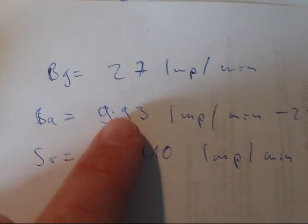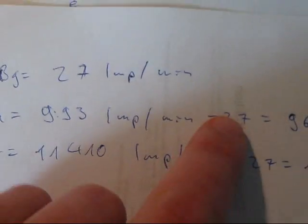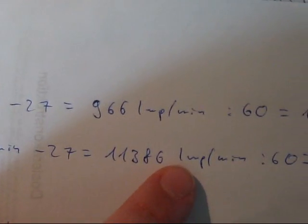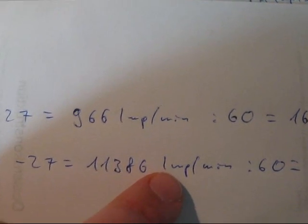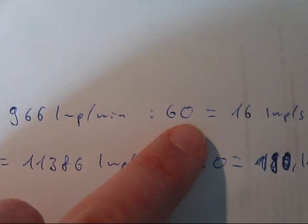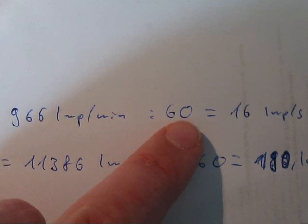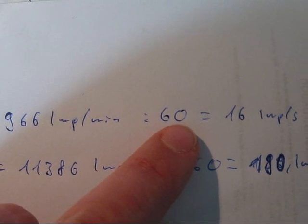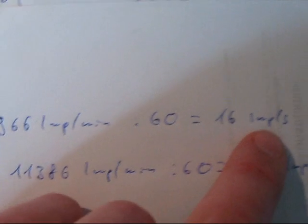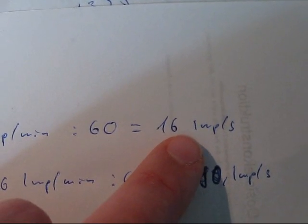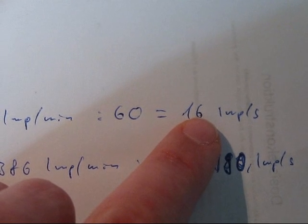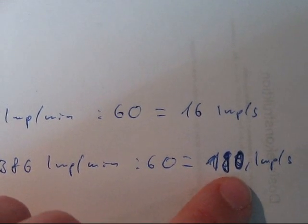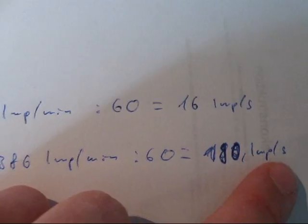So we have to take our impulses minus the background radiation, and we'll be left with the actual real impulses we got from the source. Divide that by 60 because we were taking the activity in Becquerel, which is decays per second, so we're going to have to convert our units to impulses per second. We got 16 impulses per second from the Barium and 190 impulses per second for the Strontium.